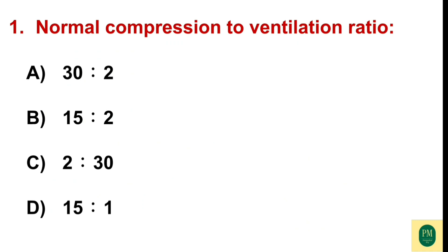The first question: Normal compression to ventilation ratio. Option A: 30 is to 2. Option B: 15 is to 2. Option C: 2 is to 3. Option D: 15 is to 1. The correct option is Option A — 30 is to 2.